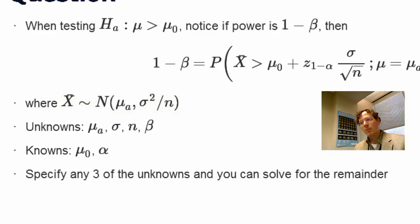So the point I'd like to make is that the unknowns in this equation are mu a, sigma, n, and beta, or equivalently to beta, the power that you want. The knowns are mu naught, and usually you know alpha, you know exactly which type 1 error rate that you would like.